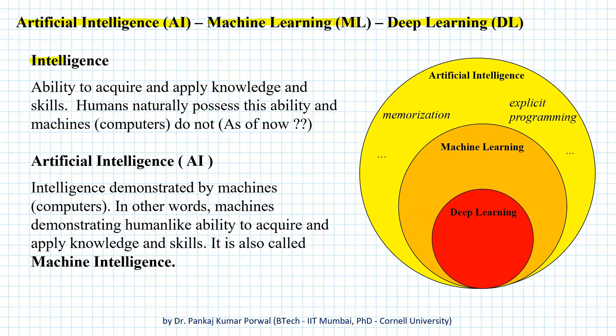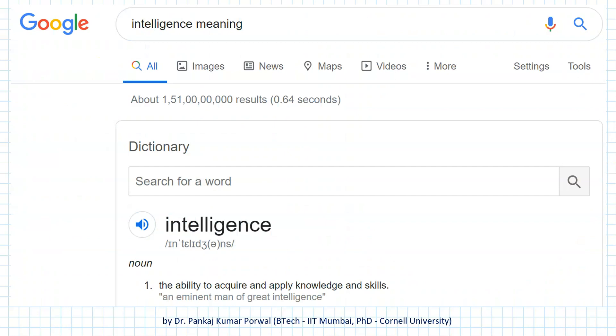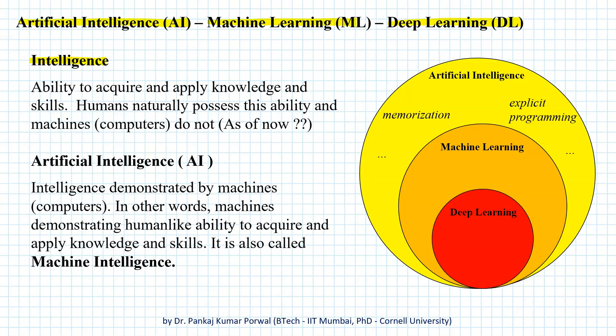If we look at the Google definition of intelligence, it says it is the ability to acquire and apply knowledge and skills. This ability includes the ability of humans to memorize facts, understand them, analyze them and reason about them, reach a conclusion, devise an action plan and execute that action plan. Humans naturally possess this ability, but machines or computers do not.